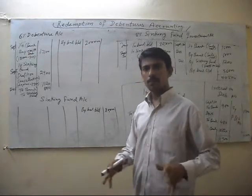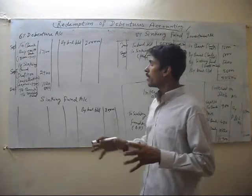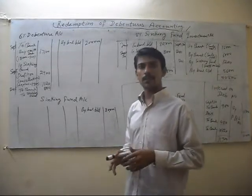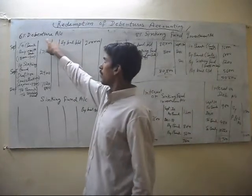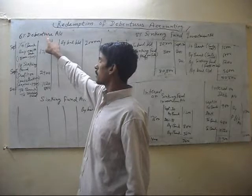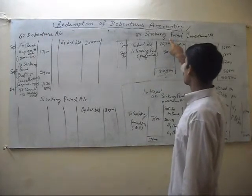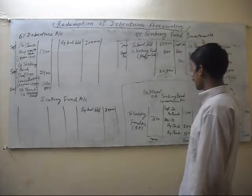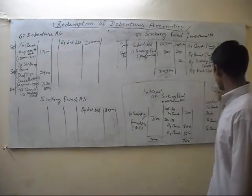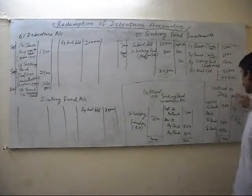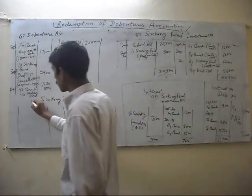Welcome back to the third part of Redemption of Debenture Accounting. In this part, we will learn to make 5 accounts. The first account is the 6% Debenture Account. The second account is the 8% Sinking Fund Investment Account. The third is Interest on Sinking Fund Investment Account, the fourth is Interest on Debenture Account, and the fifth is the Sinking Fund Account.